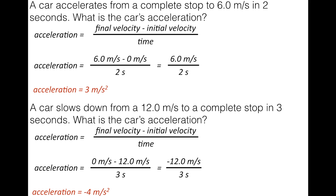That gives us an acceleration of negative 4 meters per second squared. If you ever get a negative acceleration, that tells you the object is slowing down. So if a teacher asks what an object with acceleration of -4 m/s² is doing, you'd say it's slowing down — the negative sign always means deceleration.